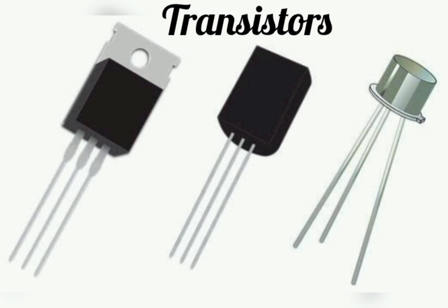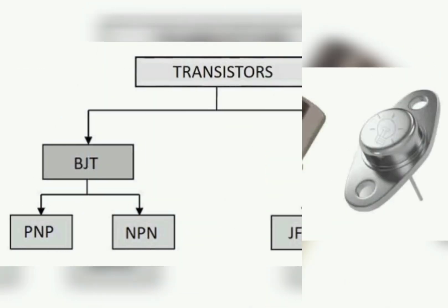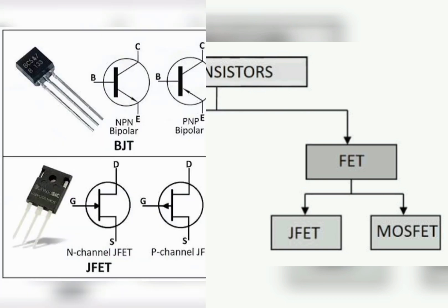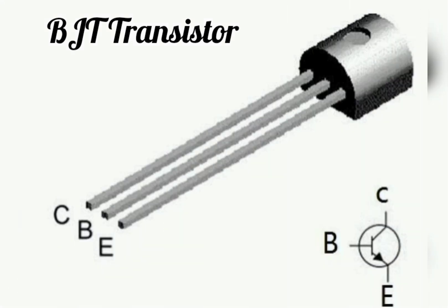Now let's talk about transistors. Transistors are used as electronic switches or amplifiers. There are two major types: the BJT and the FET. In this video we're going to focus on the BJT transistor. The PNP under the BJT means it requires a negative voltage to bias it, while NPN means it requires a positive voltage to bias it. You can see the symbols of the transistors.